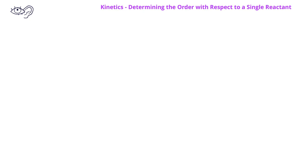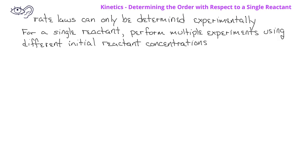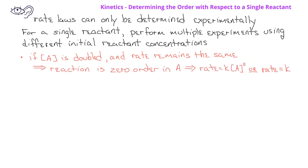In the previous video, we saw that rate laws can only be determined experimentally. If we have a reaction with a single reactant, we can do multiple experiments in which each experiment begins with a different initial concentration of the reactant. In this situation, if the concentration of A doubles from one experiment to another but the rate stays the same, that means the reaction is zero order with respect to reactant A.